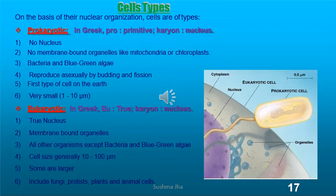The other type is eukaryotic — eu means true and karyon means nucleus — so organisms having a true nucleus with a true nuclear membrane. Bacteria and blue-green algae are prokaryotic; all the rest of the organisms on earth are eukaryotic. The eukaryotic cell is bigger than the prokaryotic, ranging between 10 to 100 micrometers, and includes all groups like fungus, protista, plant, and animal cells.